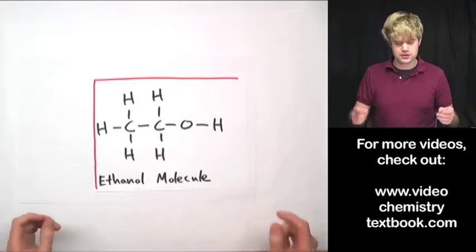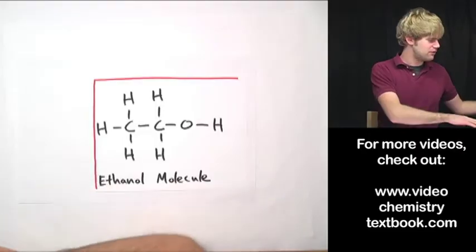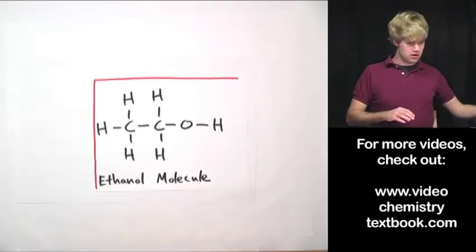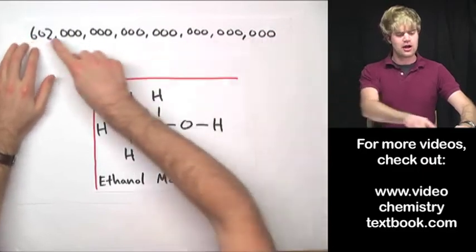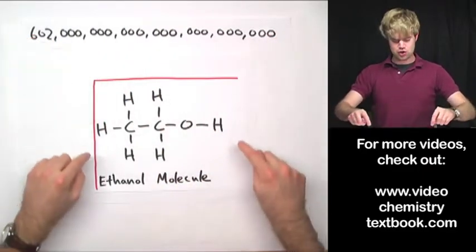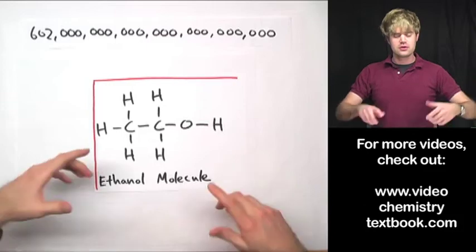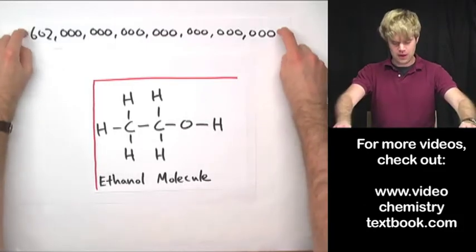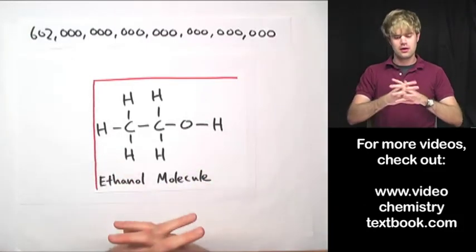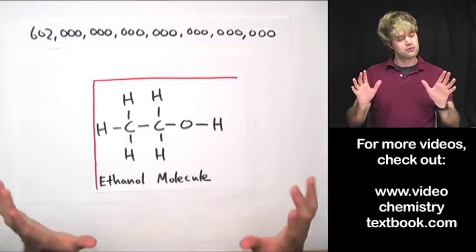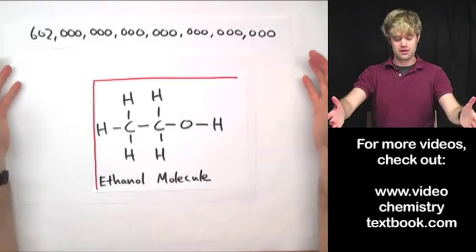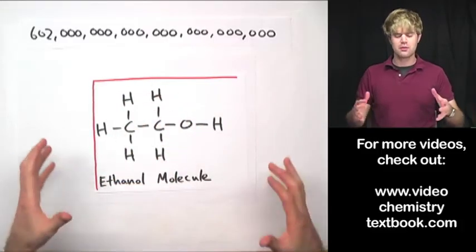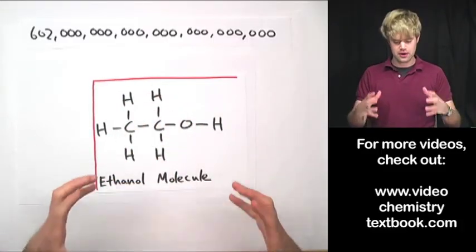And if I have a mole of molecules, that means that I have—where did it go? Here it is—it means that I have 602 sextillion of these. So that's how these words, mole and molecule, can relate to each other. But don't confuse them. Mole is a big number used for counting things. And a molecule is what you get when a whole bunch of atoms come together to make a structure.